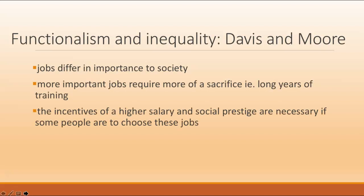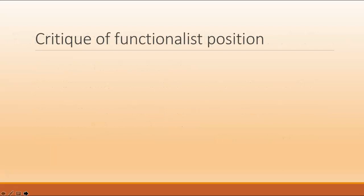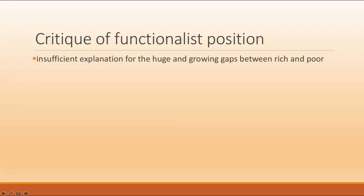This leads to their next point: that people willing to make those sacrifices will only do so if there are incentives in terms of money and prestige. This leads to the bottom line that social inequality, according to Davis and Moore, is functional for society. There are several critiques of this functionalist position on social inequality.